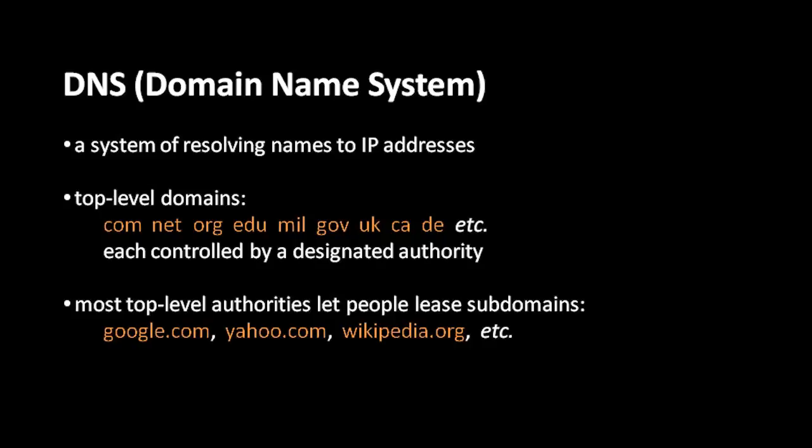Names in the DNS system are organized into what are called top-level domains. The most popular top-level domains include .com, .net, .org, .edu (for education), .mil (for military), .gov (for government), and then country codes like .uk for the United Kingdom, .ca for Canada, and .de for Deutschland (Germany). Each top-level domain is controlled by a designated authority.